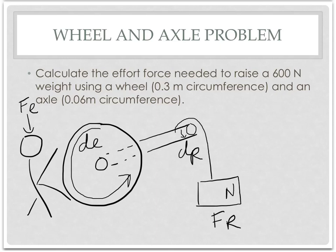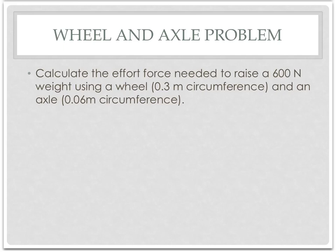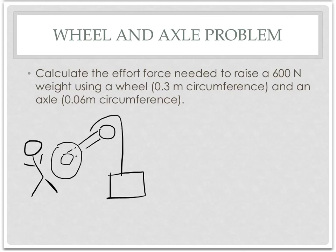So let's apply this to our problem here. So we're going to redraw that for the problem. I'm going to draw a little smaller so we have room for work. So here's you, there's our axle. It's lifting some sort of mass. So calculate the effort force needed to raise a 600 newton weight using a wheel. So the wheel is 0.3 meters in circumference, and an axle which has a circumference of 0.06 meters.